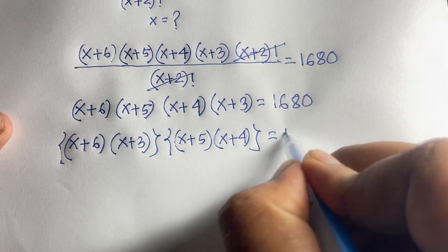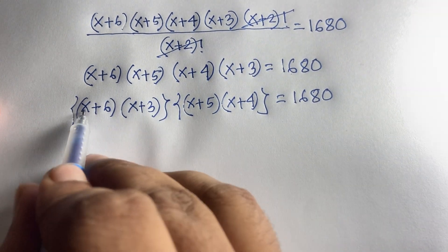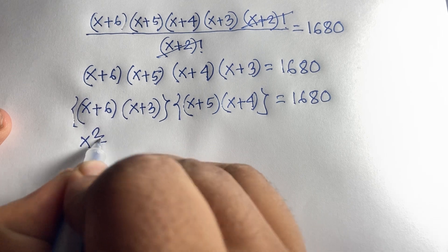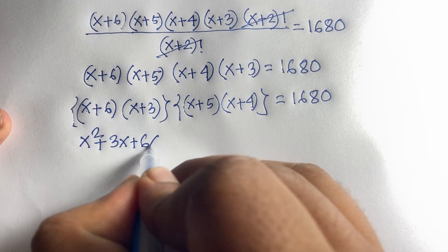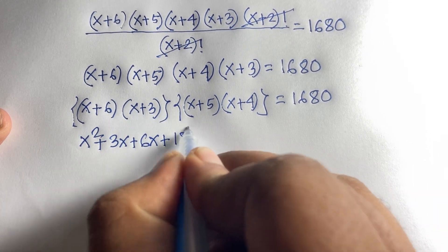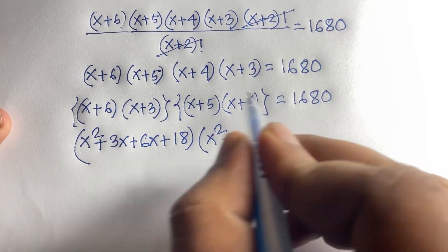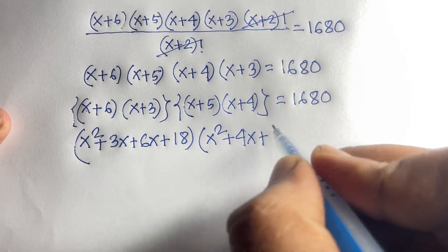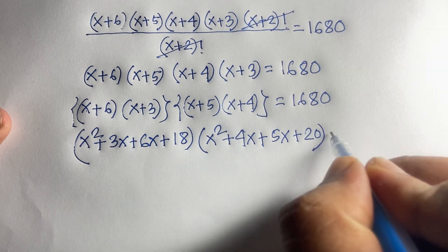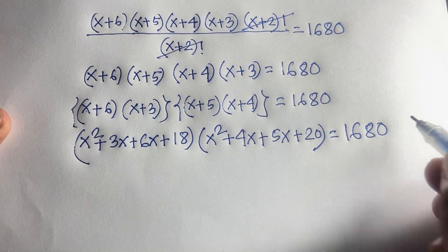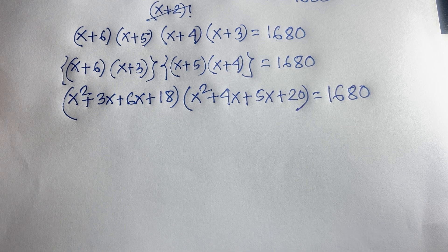Expanding each pair: (x+6)(x+3) = x²+3x+6x+18 = x²+9x+18, and (x+5)(x+4) = x²+4x+5x+20 = x²+9x+20. So we have (x²+9x+18)(x²+9x+20) = 1680.